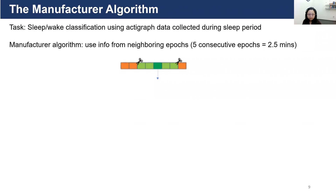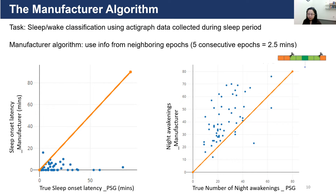When we compare the manufacturer algorithm with PSG data, for true sleep onset latency — how much time it takes for the participant to fall asleep — the manufacturer algorithm underestimates for many participants. For instance, looking at one blue dot, even though according to PSG the participant took over one hour to fall asleep, according to the manufacturer algorithm the sleep onset latency was just a few minutes. This underestimation is really dangerous because sleep onset latency is a very important indicator for sleep disorders like insomnia, and prolonged sleep latency has been associated with decreased brain stem volume in patients with mild cognitive impairment.